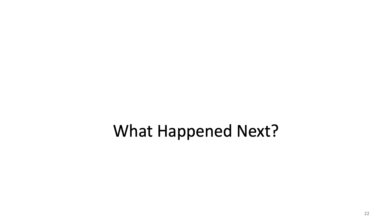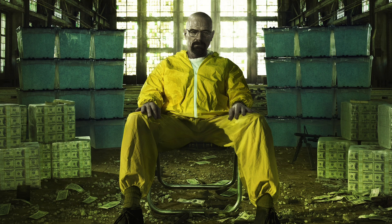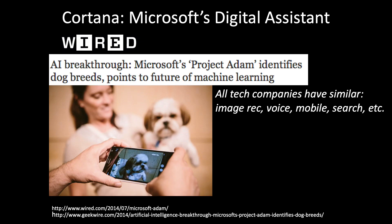So what happened next? Things took a turn. Big companies started using machine learning and making money with it. As a result, scaling up stochastic gradient descent moved to the forefront of researcher and industrial minds. One of my favorite big company applications was from Microsoft. In 2014 or so, Google made a lot of noise about recognizing cats. Not to be outdone, Microsoft built their system to recognize dog breeds. That Microsoft phone is recognizing that the dog is a Shih Tzu.